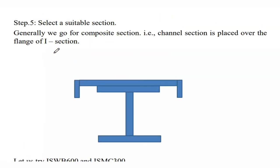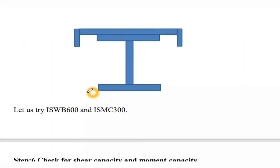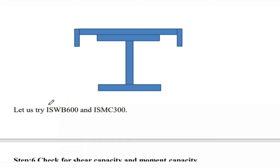Step 5: Select a suitable section. Using steel tables, we select ISWB 600 (wide flange beam) combined with ISMC 300 (channel section).